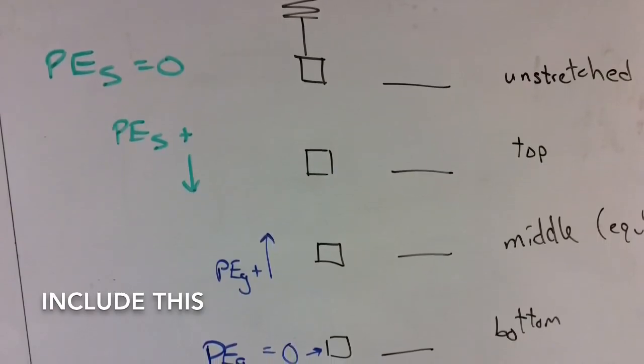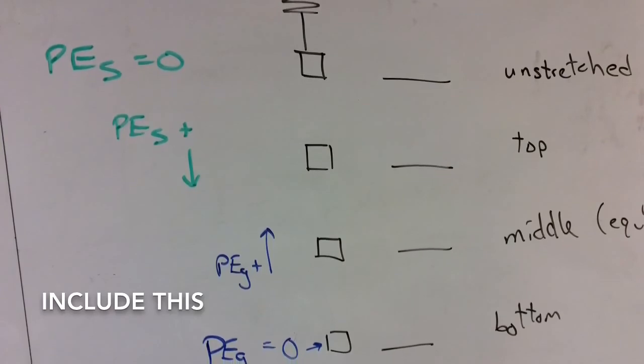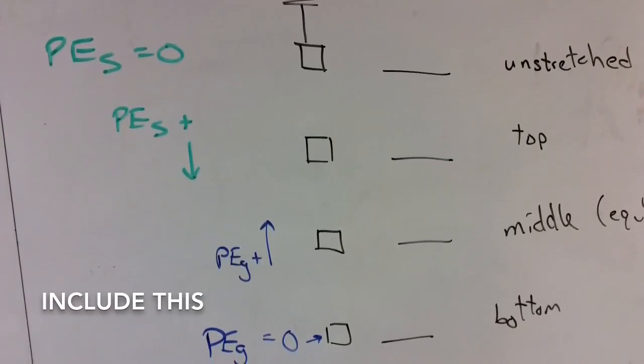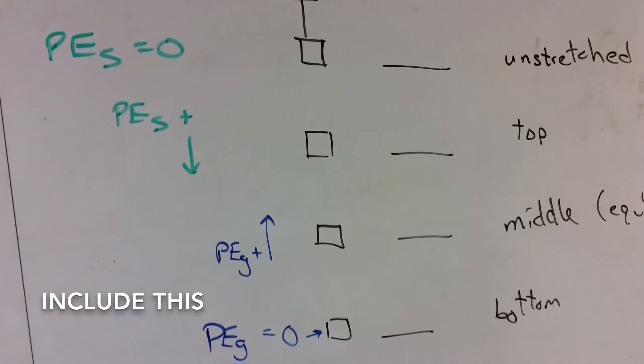Remember while doing your calculations that the elastic potential energy is measured from the unstretched position, and the gravitational potential energy is measured from the bottom most position.